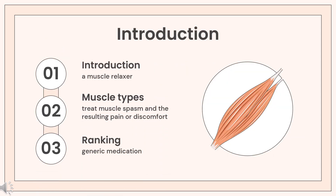Chlorozoxazone is a centrally acting muscle relaxant used to treat muscle spasm and the resulting pain or discomfort. It can also be administered for acute pain in general and for tension headache. It acts on the spinal cord by depressing reflexes.